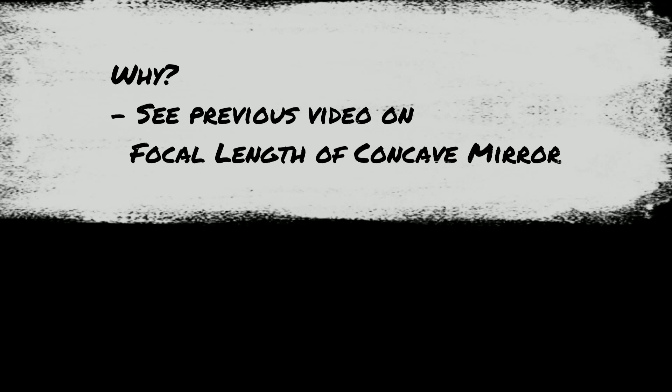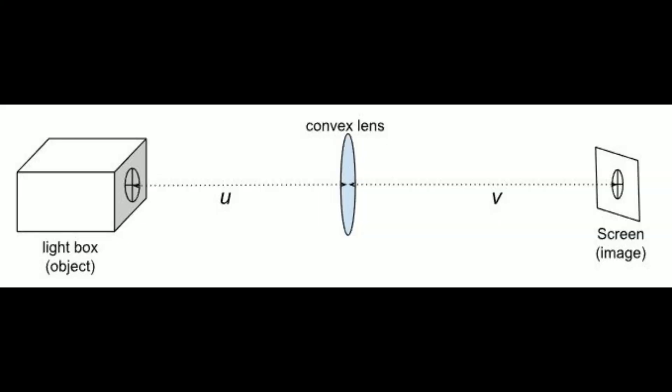And that's it for finding the approximate focal length of a convex lens. If you're curious why we do this, you can see the explanation in my previous video on the focal length of a concave mirror, where I've included a link. For the main experiment, you're going to need a setup with an object, a light source, a convex lens, and a screen.